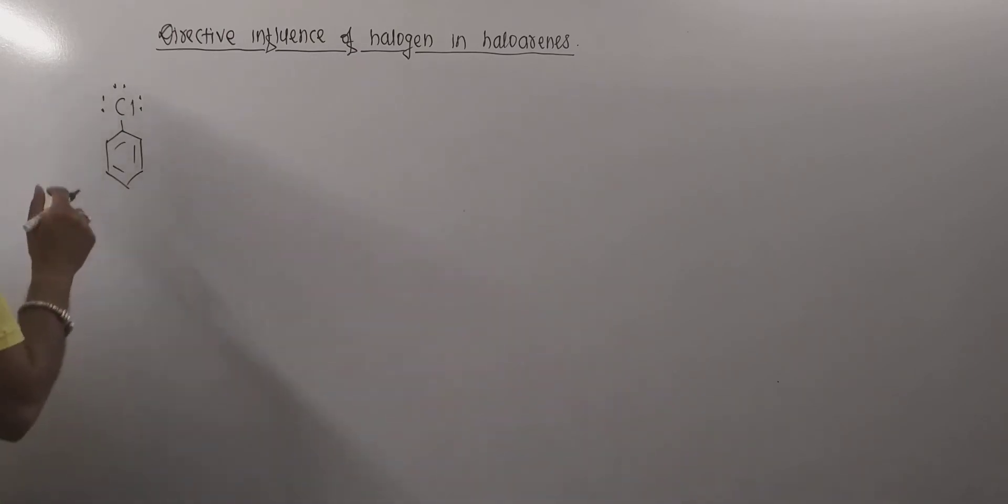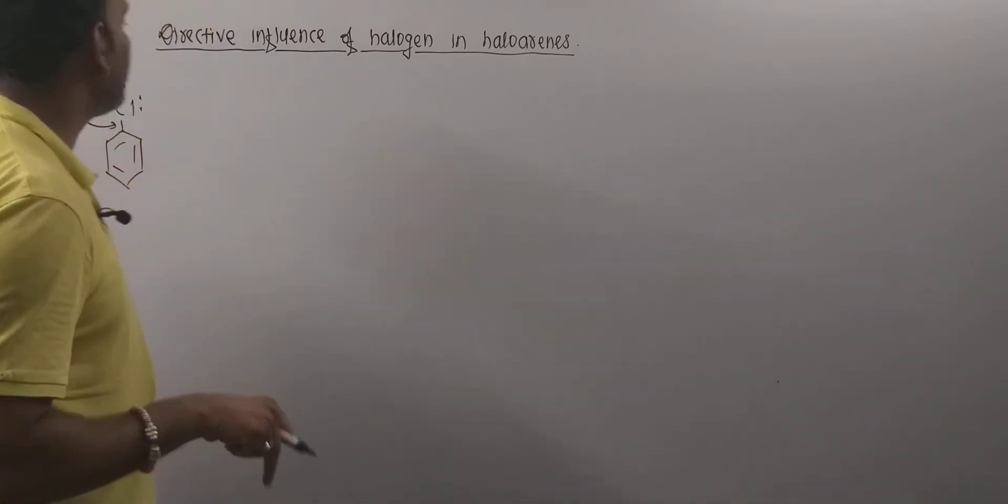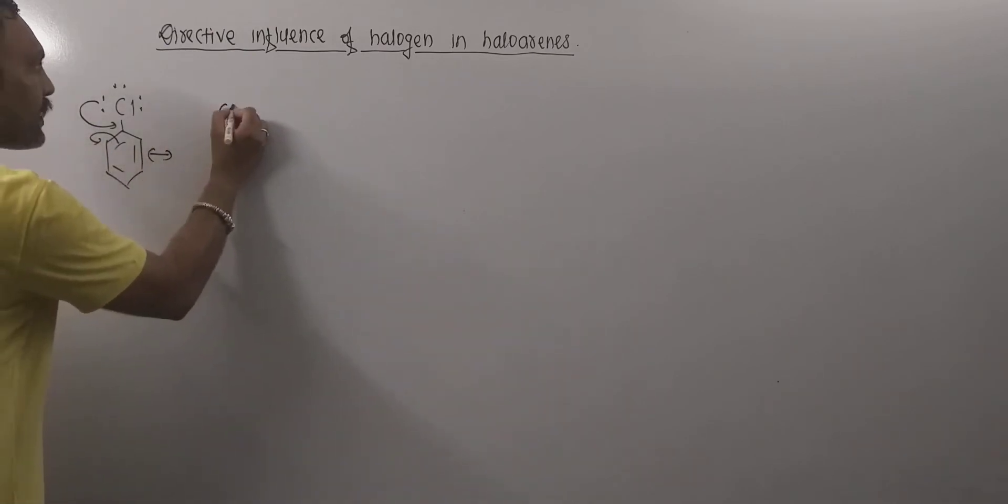Now what happens in chlorobenzene? One of the lone pairs on chlorine is shared with this ring. I mean the lone pair on chlorine is in conjugation with the pi electrons of the ring. So thus the resonating structure so obtained can be given as...